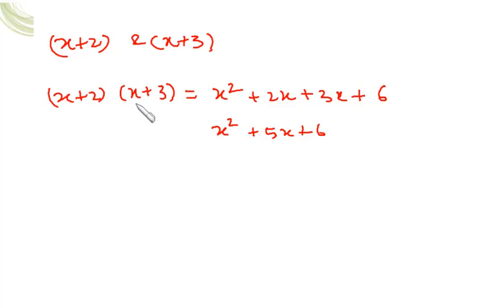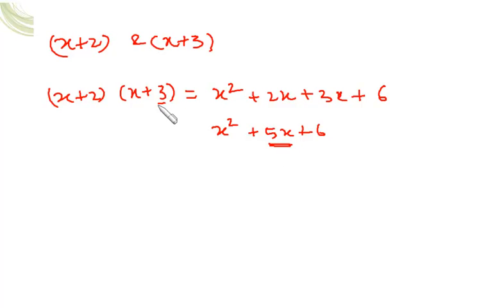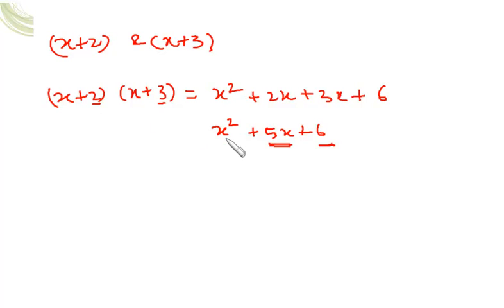Notice the middle term — the coefficient of x, which is 5 — is the sum of 3 and 2. And the constant term, 6, is the product of 2 and 3. This means there is an easy interconversion between the expanded form and the factored form.